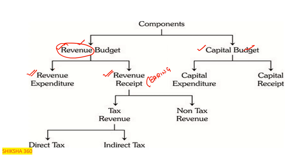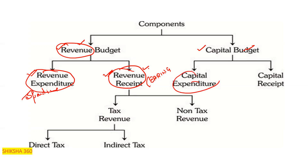Under the Revenue Budget we have revenue expenditure and revenue receipts. Under the Capital Budget we have capital expenditure — for the creation of assets — and capital receipts, which is income from any loan or asset. Revenue receipts are further divided into tax revenue and non-tax revenue. Non-tax revenue includes fees charged by the government, such as when you purchase a new car.